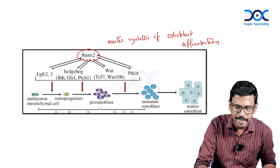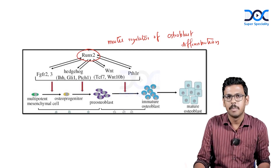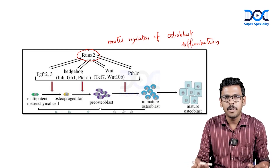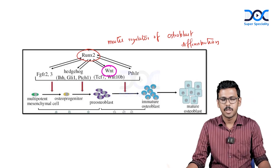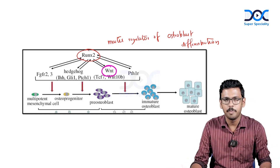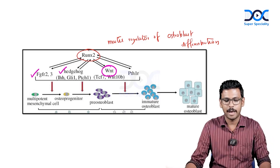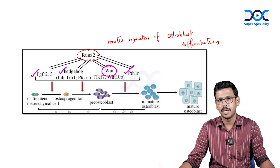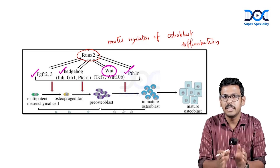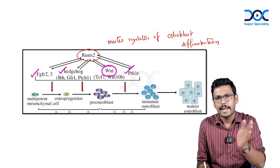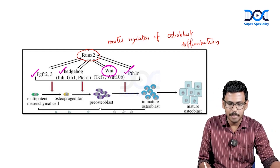RUNX2 promotes bone formation by indirectly activating bone-forming pathways. The most important bone-forming pathway is WNT signaling, followed by the Indian hedgehog pathway, fibroblast growth factor receptor pathway, and the PTH receptor pathway. These are four to five important bone-forming pathways, of which WNT signaling is the most critical.